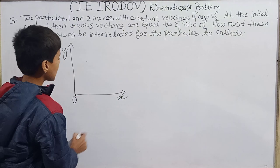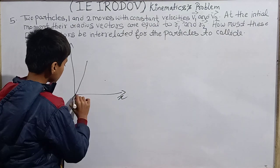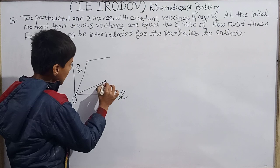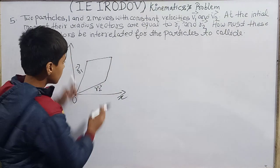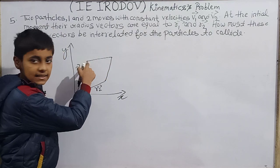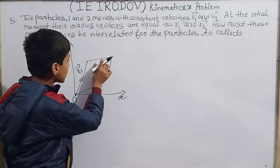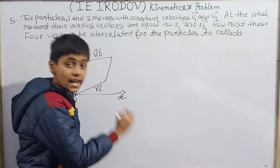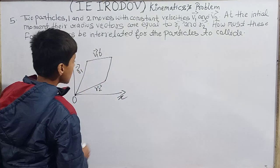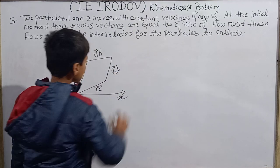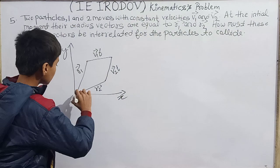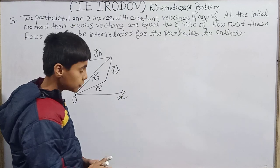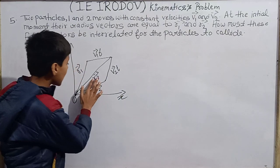Let's draw x and y axes. Place particle 1 here and particle 2 here in the plane. The position vector of particle 1 is vector r₁ and of particle 2 is vector r₂. Now suppose both particles move toward each other. Particle 1 moves with velocity vector v₁, so after time t it travels vector v₁·t. For them to collide, particle 2 must also reach the same point at the same time t.